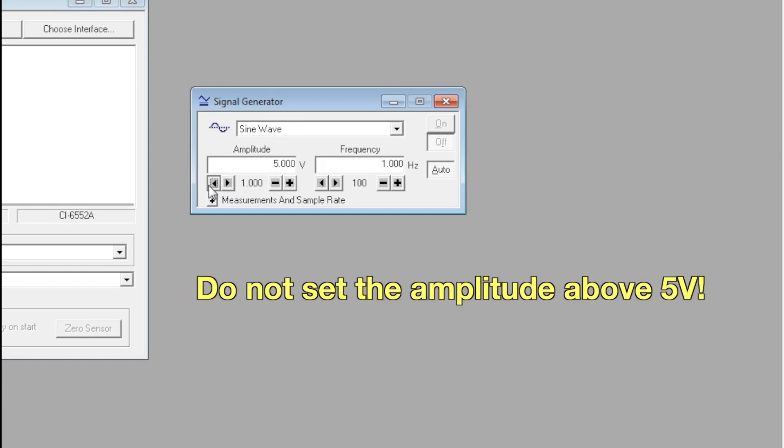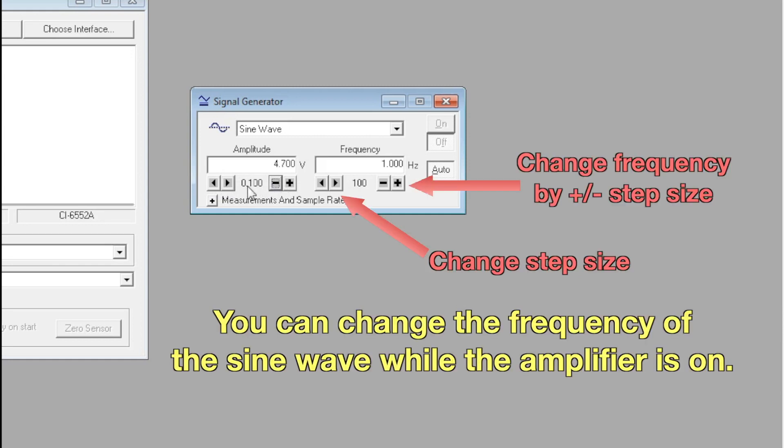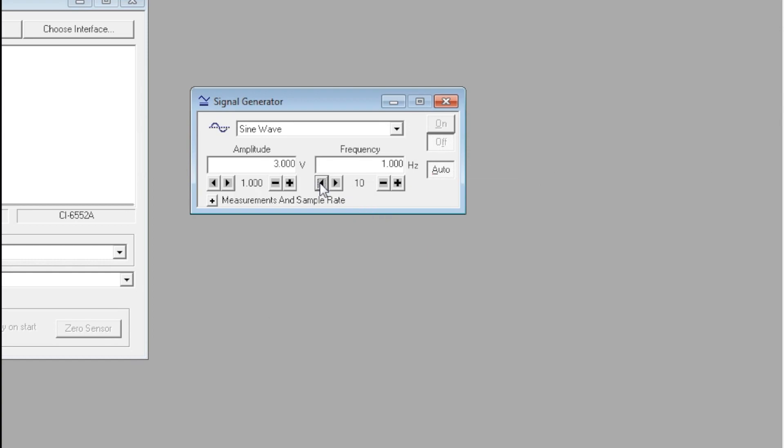When adjusting the amplitude, do not set it above 5 volts. You can change the frequency and amplitude while the power amplifier is on by pressing the plus and minus buttons. You can also set the step size of these changes using the left and right arrows.